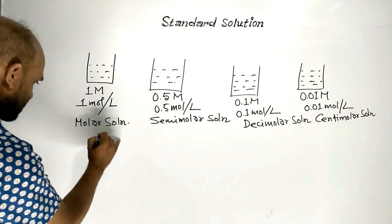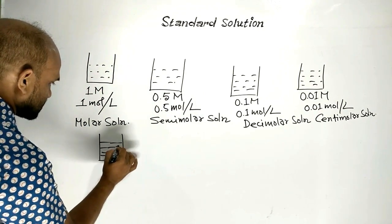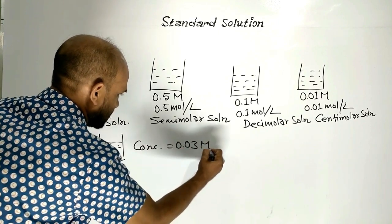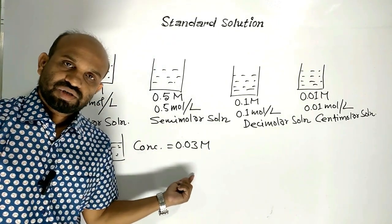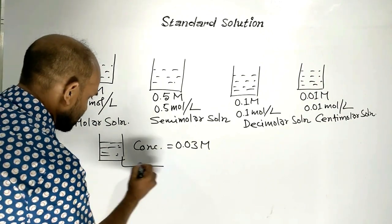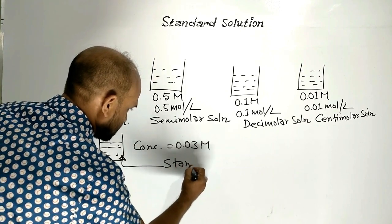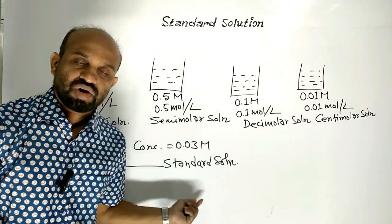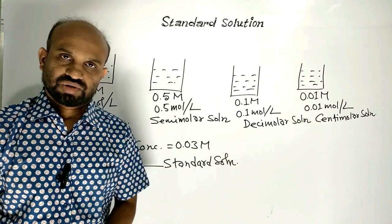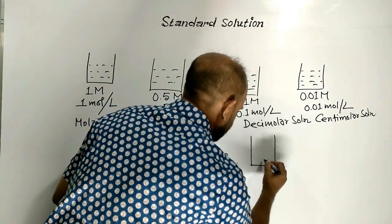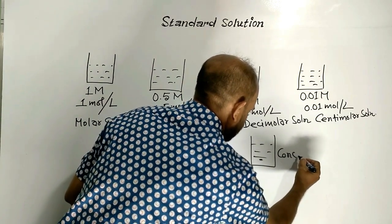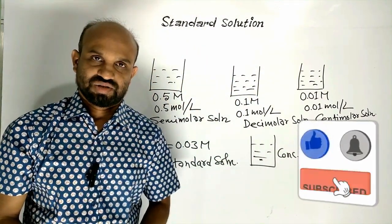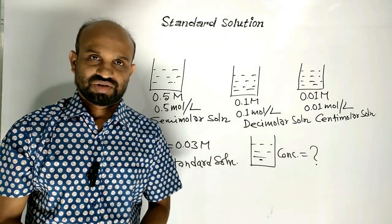Again, suppose another solution of primary standard substance — for instance, suppose its concentration is 0.03 molar. That means the concentration of this solution is known, so it is a kind of standard solution. Simply, a solution of known concentration is known as standard solution. Suppose another solution whose concentration is not known — then it will not be a standard solution. This is all about standard solution. Thanks for watching.